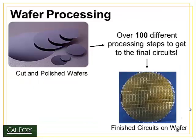Once we've made the wafers out of the ingot, we go through about 100 steps in microfabrication to produce finished circuitry on a wafer. Then each of those dies is cut away from the wafer with high-precision diamond saws.